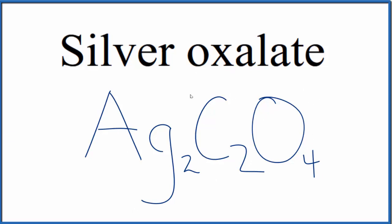If you're given the formula and asked to write the name, sometimes you'll see people write this as silver 1 oxalate. That's because silver is a transition metal, but since it's almost always 1 plus, oftentimes we won't write this Roman numeral 1 here.